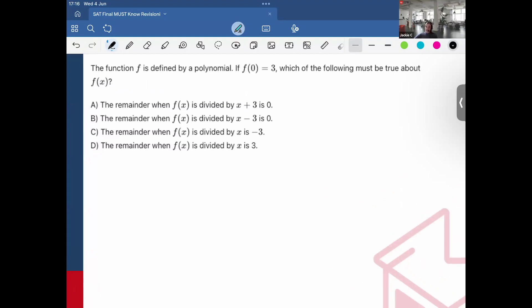So this says the function f is defined by a polynomial where f(0) is equal to 3. Which of the following must be true about f(x)? And then it has a bunch of choices that talk about the remainder.